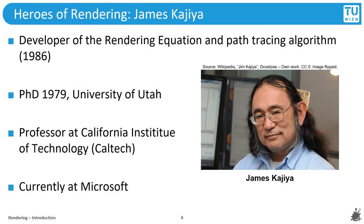The first entry in our category Heroes of Rendering today is Jim Kajiya. Jim Kajiya is the inventor of the rendering equation and as a side product also of the path tracing algorithm, which followed directly from his scientific paper simply called the rendering equation. The paper has been cited over 3500 times. He got his PhD at the University of Utah, was a professor at Caltech, the California Institute of Technology, and currently Jim is with Microsoft.